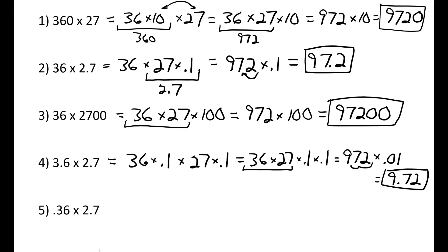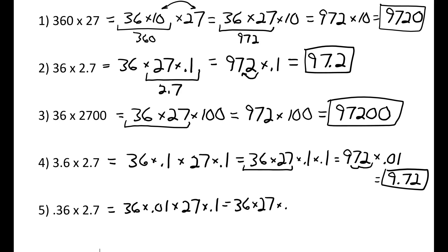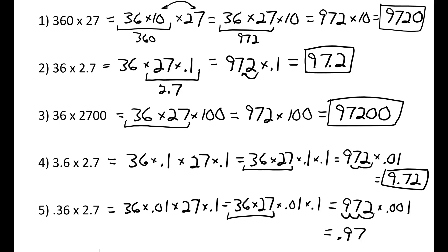Number five: 0.36 times 2.7. I can write 0.36 as 36 times 0.01, and 2.7 as 27 times 0.1. Rearranging, this is 36 times 27 times 0.01 times 0.1. Since 36 times 27 is 972, and 0.01 times 0.1 equals 0.001, I move the decimal point three places to the left, giving me 0.972.